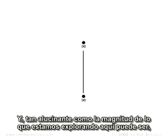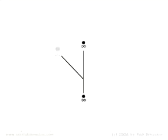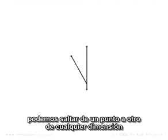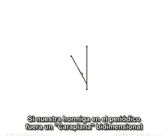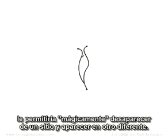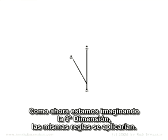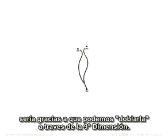If we were to branch off from that seventh dimensional line to draw a line to yet another infinity, we'd be entering the eighth dimension. We can jump from one point in any dimension to another simply by folding it through the dimension above. Folding a two-dimensional world through the third dimension allows a flatlander to magically disappear from one location and appear in a different one. As we imagine the ninth dimension, the same rules apply: if we were to instantaneously jump from one eighth dimensional line to another, it would be because we're able to fold through the ninth dimension.